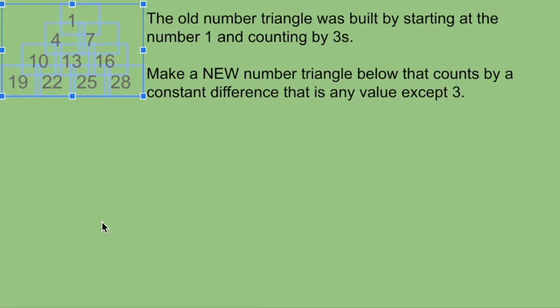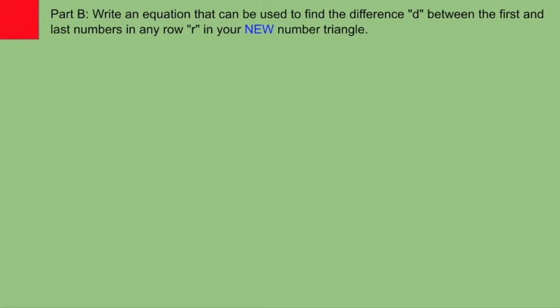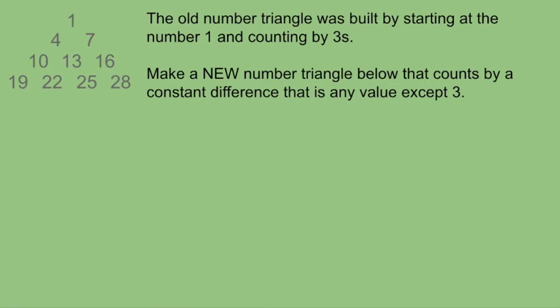Second document. All the same questions. What's the difference between the last number and the first number in row 5? Write an equation using D and R. And what's the last number in row 8? So all the same kinds of questions. But I want you to make your own number triangle. You're not allowed to count by 3.